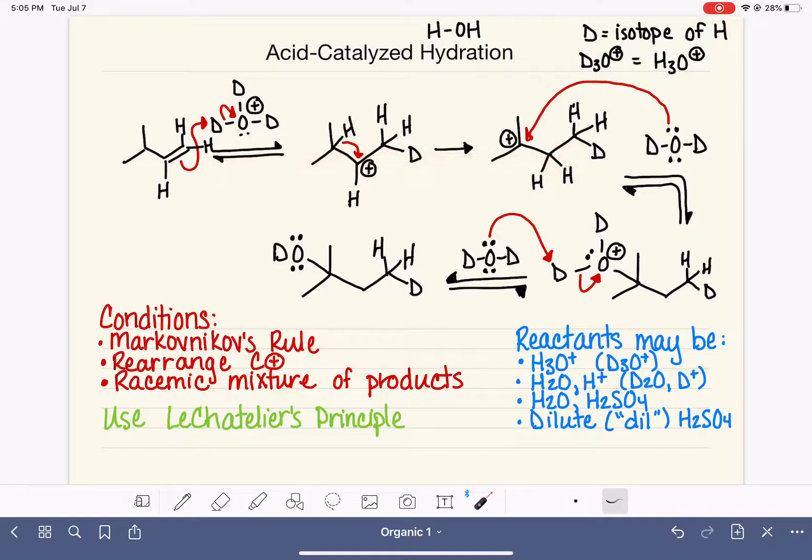So if we want this reaction to proceed to the left, which we typically do, then we will want to have an excess of water present because water is a reactant over here. And having an excess of water pushes the position of equilibrium to the right.